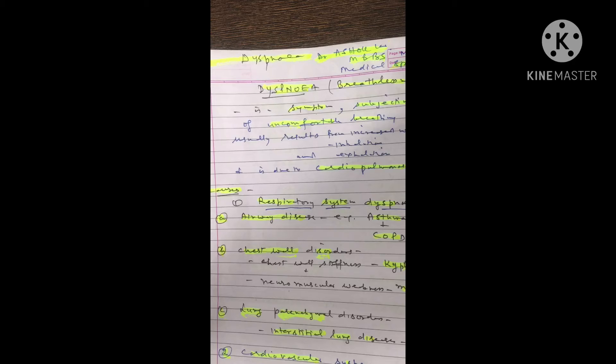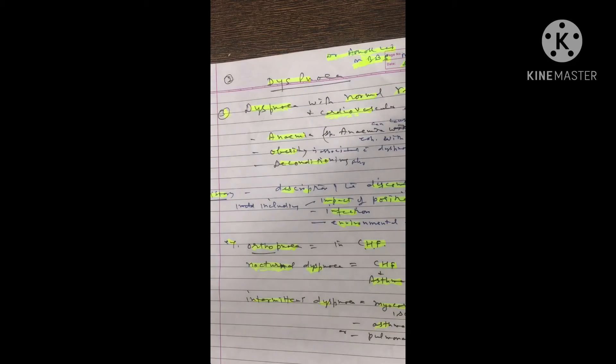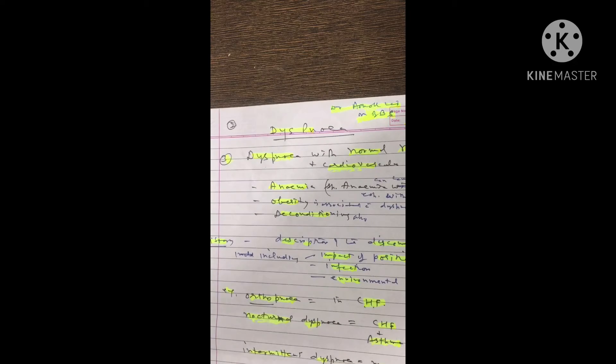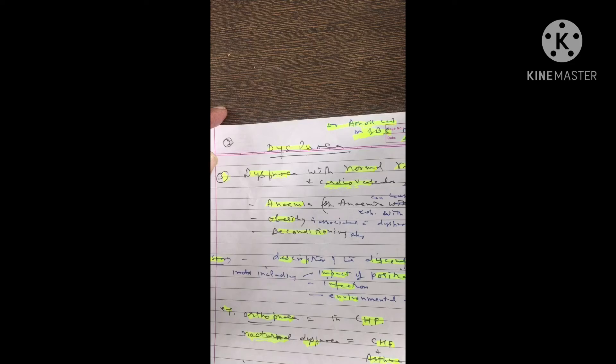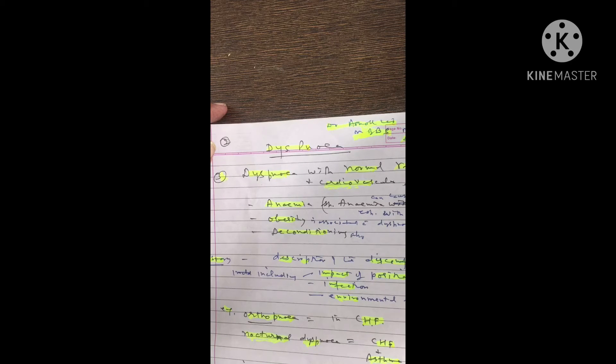Pericardial diseases is the third part of cardiovascular system dyspnea, including constrictive pericarditis and pericardial tamponade. The third category of dyspnea is dyspnea with normal respiratory and cardiovascular systems.